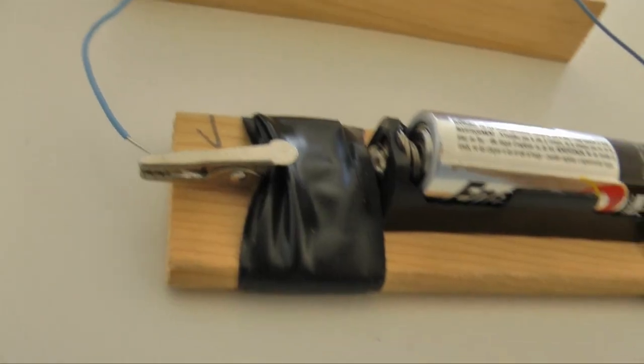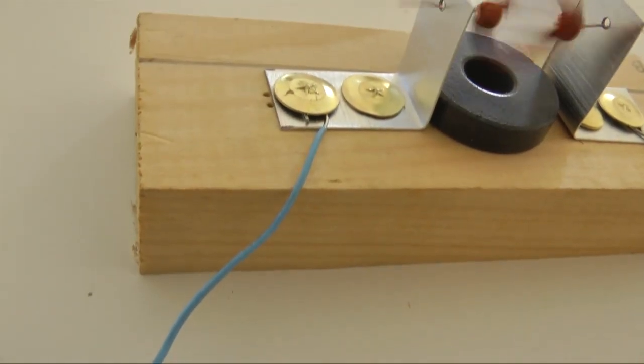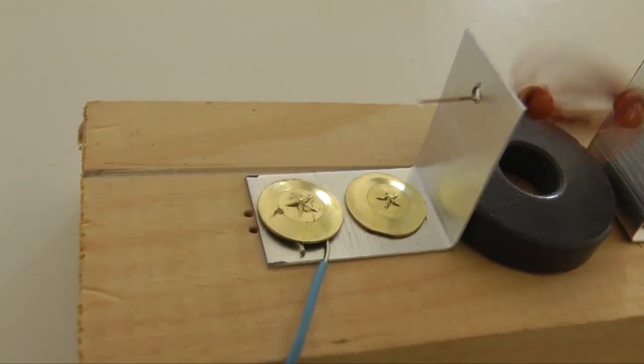Electricity is a flow of electrons. The electron flow through this motor starts at the minus end of the battery. Electrons travel through this wire to the metal bracket, through the bracket to the first coil lead.